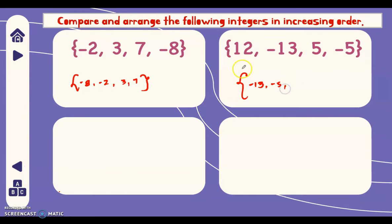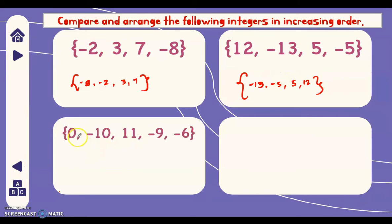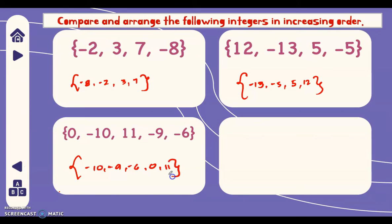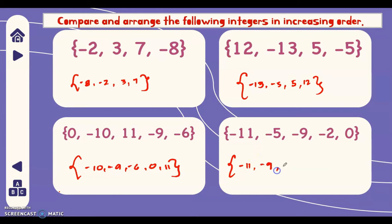Next example: 0, negative 10, 11, negative 9, negative 6. The smallest number is negative 10, then negative 9, then negative 6, then 0, then 11. Next example: the smallest number is negative 11, then negative 9, then negative 5, then negative 2, then 0. That's how you compare and arrange integers in increasing order.